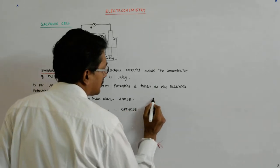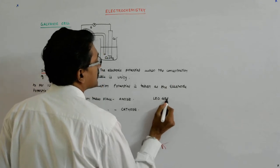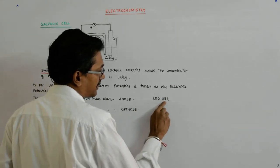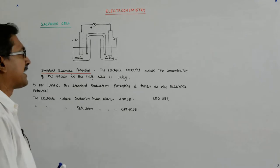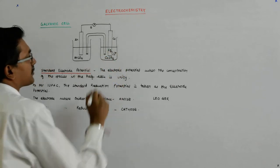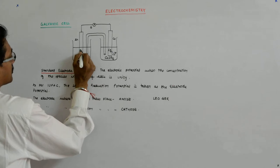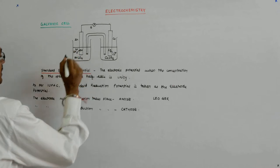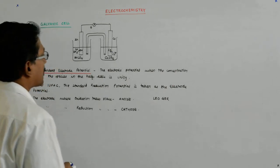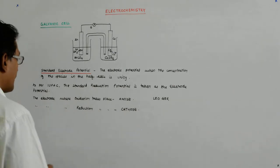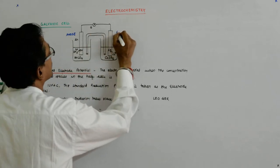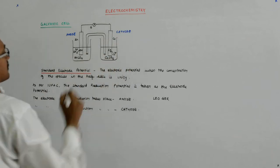I hope you know this — LEO GER: loss of electrons is oxidation, gain of electrons is reduction. So which has gained electrons? The Cu²⁺ — it was Cu²⁺ which gained two electrons and became Cu. And it was Zn which lost two electrons and became Zn²⁺. So in this case, zinc is the anode and copper is the cathode.